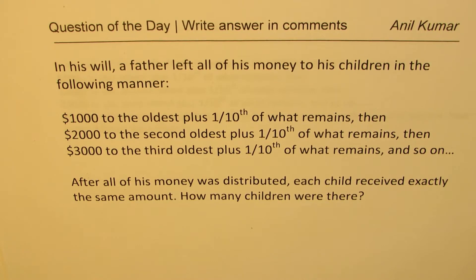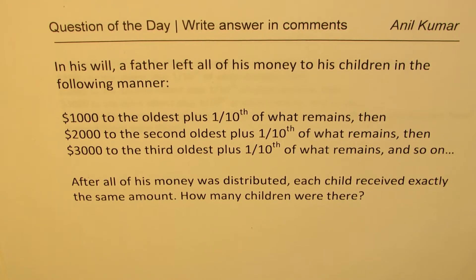The question was: in his will, a father left all his money to his children in the following manner. $1,000 to the oldest plus one-tenth of what remains, then $2,000 to the second oldest plus one-tenth of what remains, then $3,000 to the third oldest plus one-tenth of what remains, and so on. After all his money was distributed, each child received exactly the same amount. How many children were there?